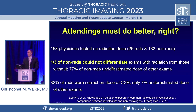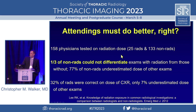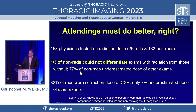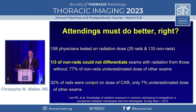You would think attendings would do better. This study looked at 158 physicians tested on various factors related to radiation from imaging — 25 radiologists and 133 non-radiologists. The biggest take-home was that a third of the non-radiologists could not actually differentiate exams that had ionizing radiation, like a radiograph or chest CT, from those that did not, like MRI or ultrasound. The majority of non-radiologists underestimated the dose. Radiologists did quite a bit better, but only a third were able to correctly state how much dose a chest radiograph has.